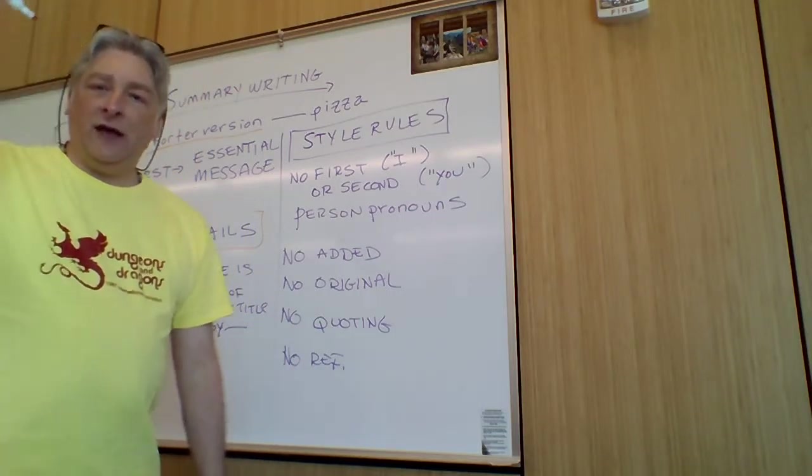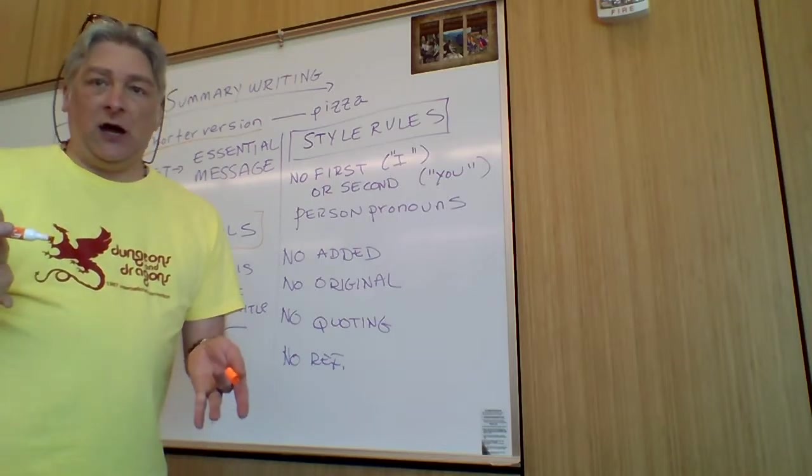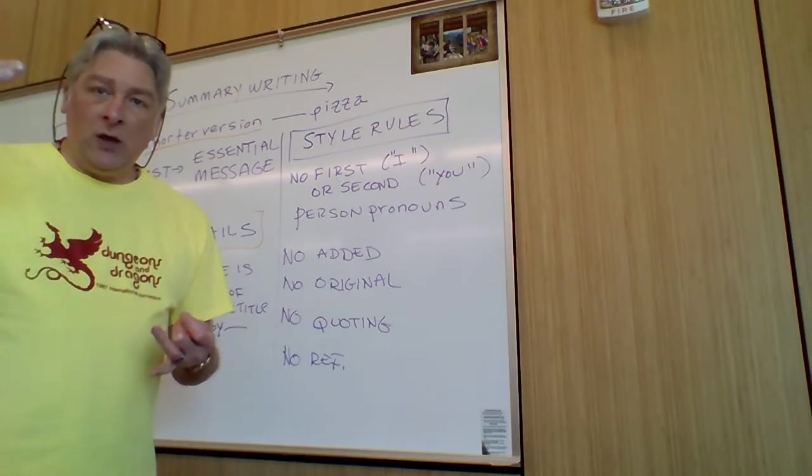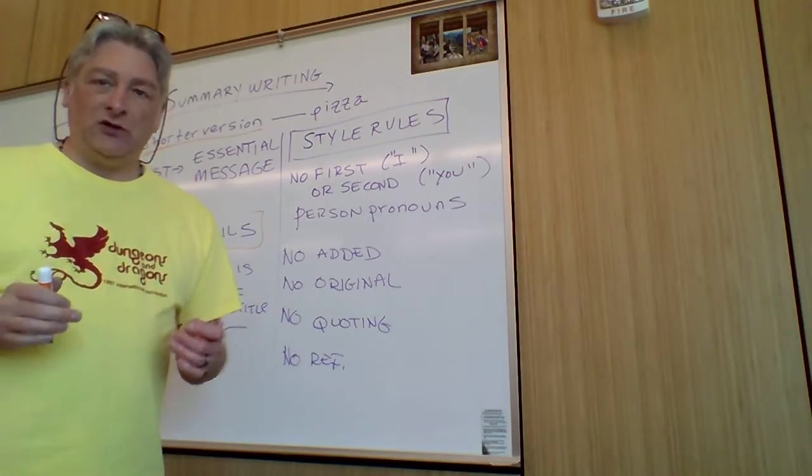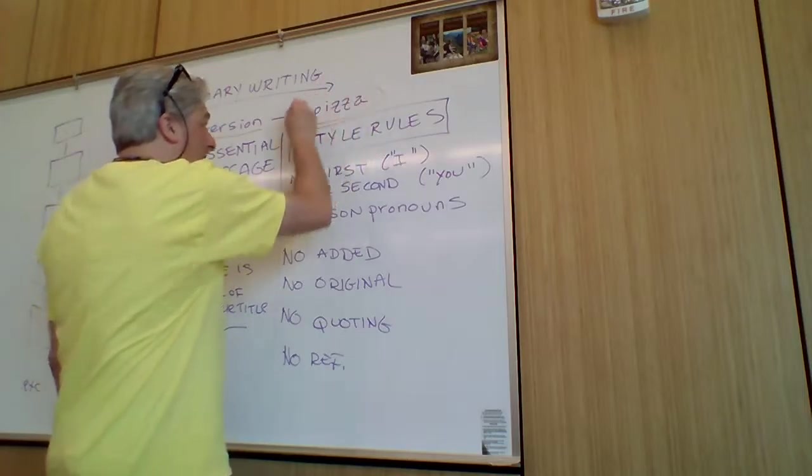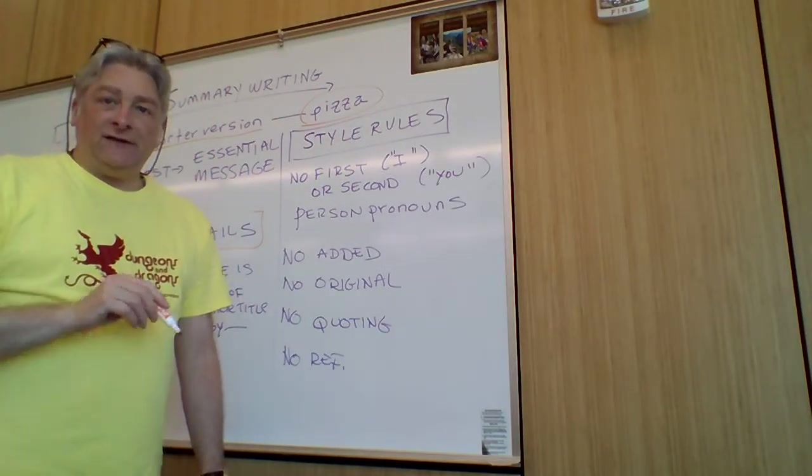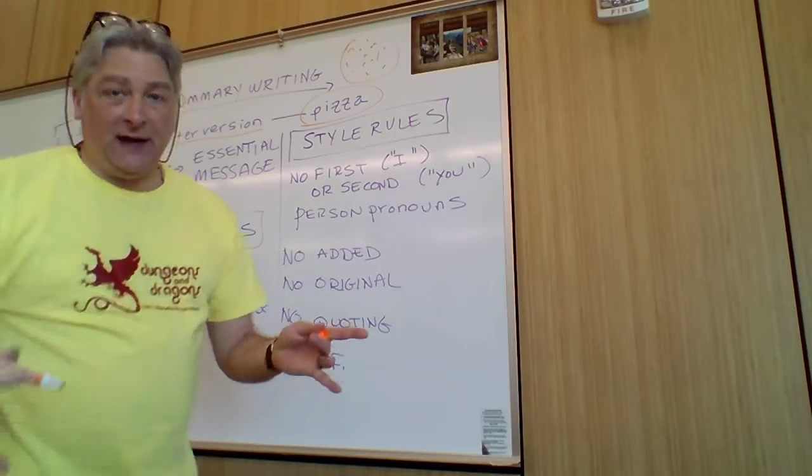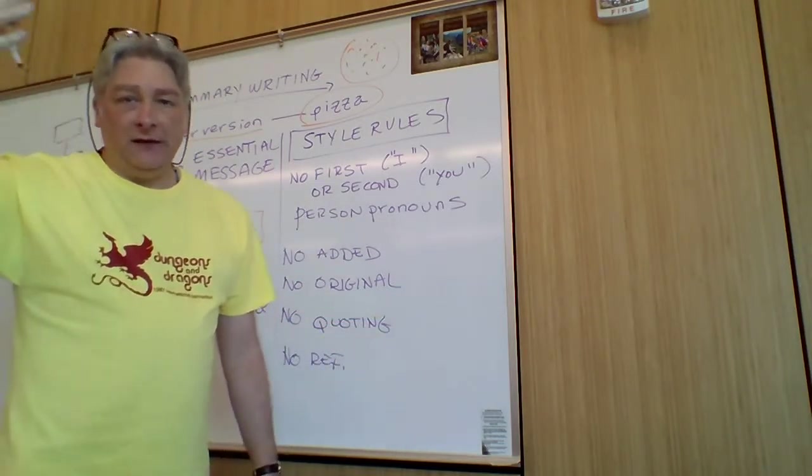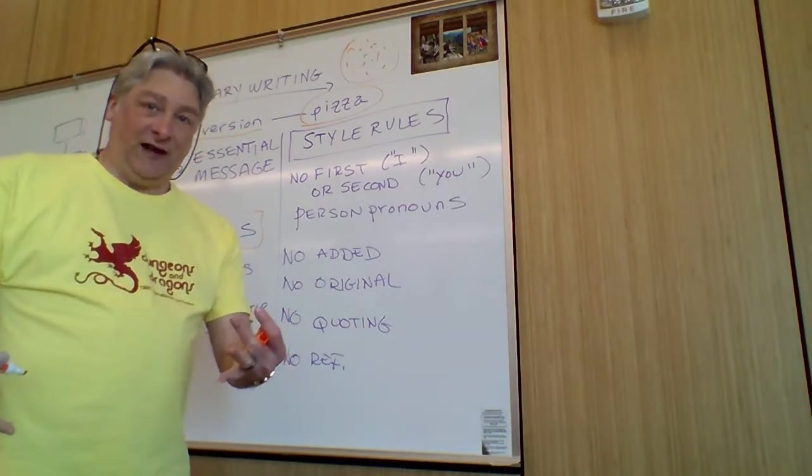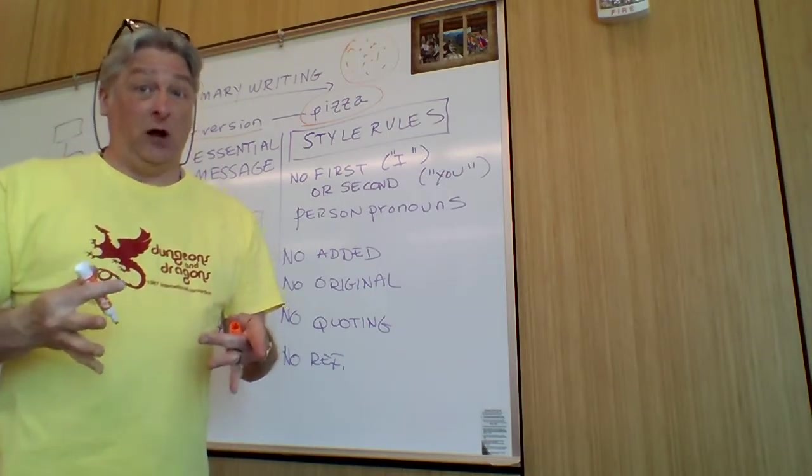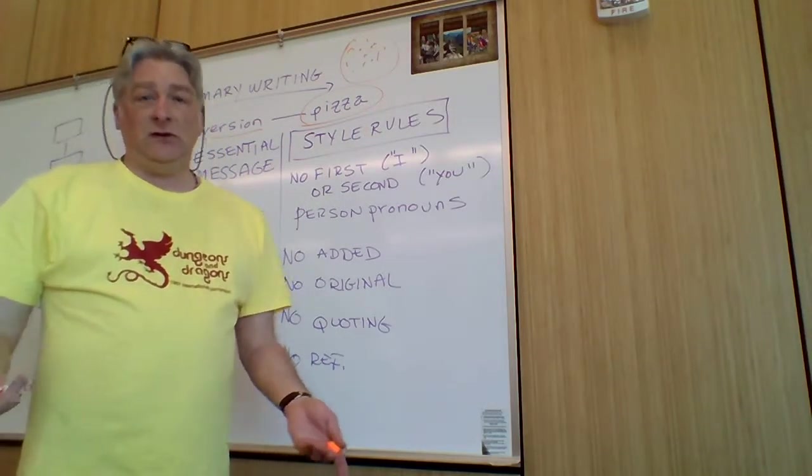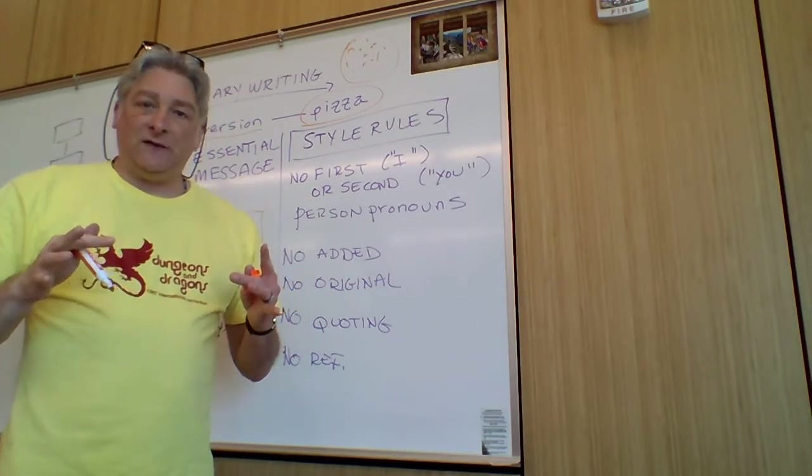You have to go through the article and identify what the key details are that you're going to include in your summary because you're not going to include everything. This is an analytical test. One thing that I stole from another instructor is to think of it like a pizza. If you have this pizza, you potentially can have all these different items. A pizza place might have 20 different items that you can put on the pizza, but not everybody likes 20 different items on their pizza. Some people don't like some of those items at all, so you have to edit.